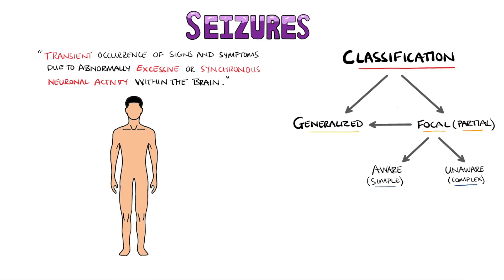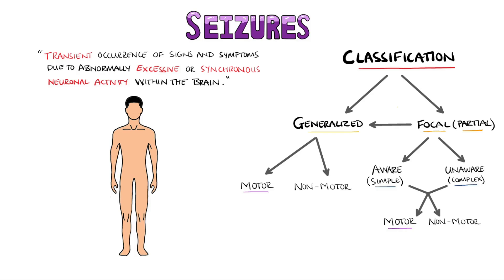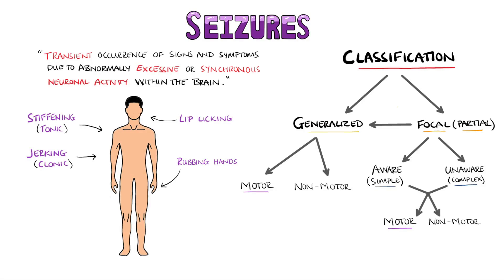We also have motor or non-motor seizures. Motor implies the involvement of movement during the seizure. Generalised seizures may feature stiffening and jerking, while focal seizures can have movements such as twitching, jerking and stiffening, but may also feature automatic movements like licking lips or rubbing hands. In focal seizures, initially one group of muscles may be affected, but this abnormal movement can later spread to other muscle groups due to abnormal neuronal activity moving to a different area. This is known as the Jacksonian march.